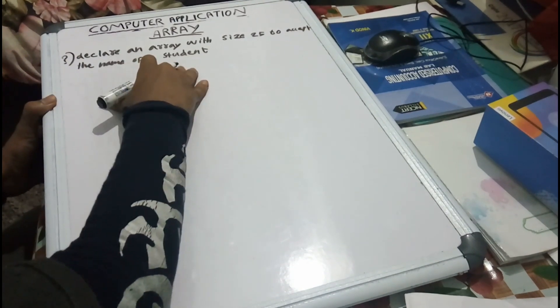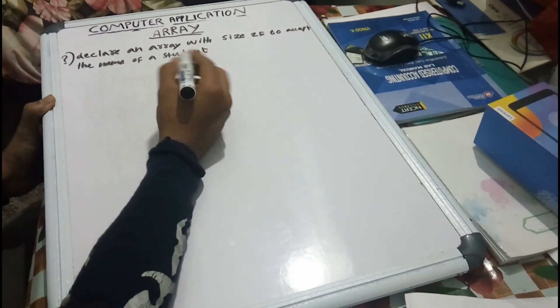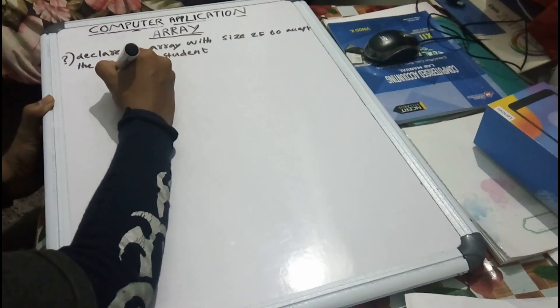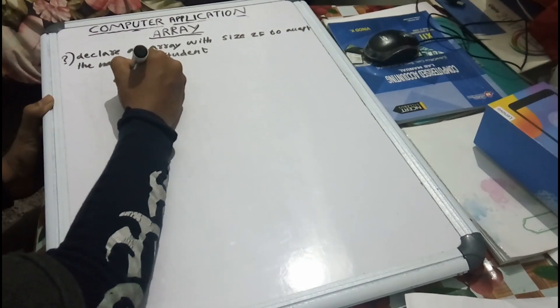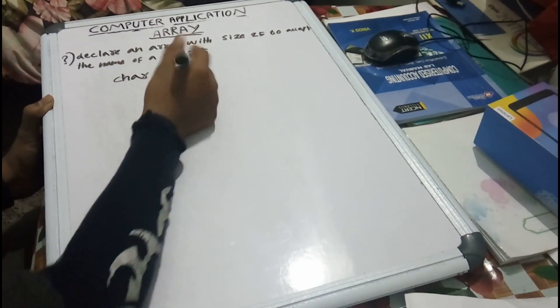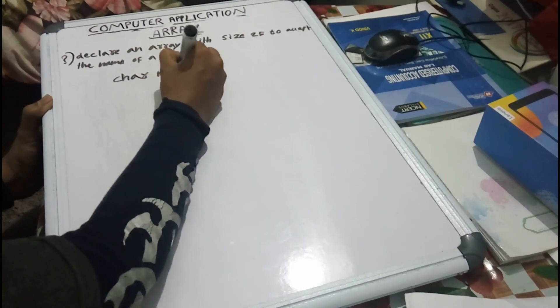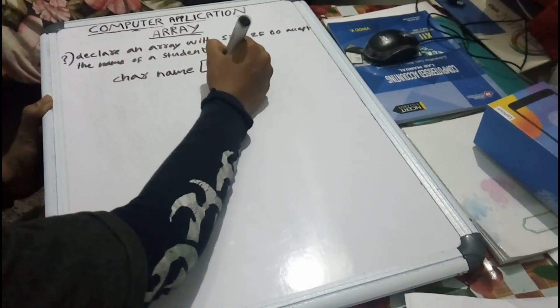The first question: declare an array with the size of 25, to accept the name of a student. The data type changes. Now, either the name of 25.